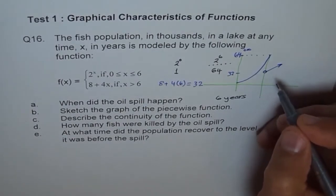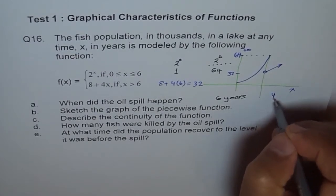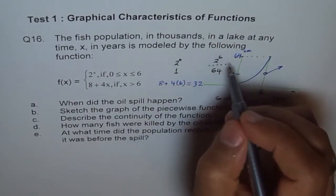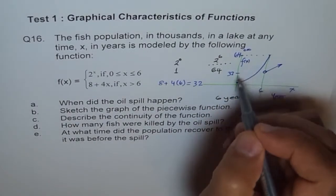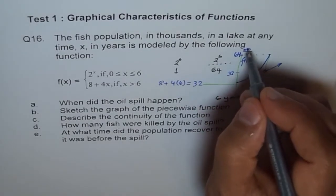Where this is x in years and f of x in thousands. So I should write thousands here, which I already mentioned.